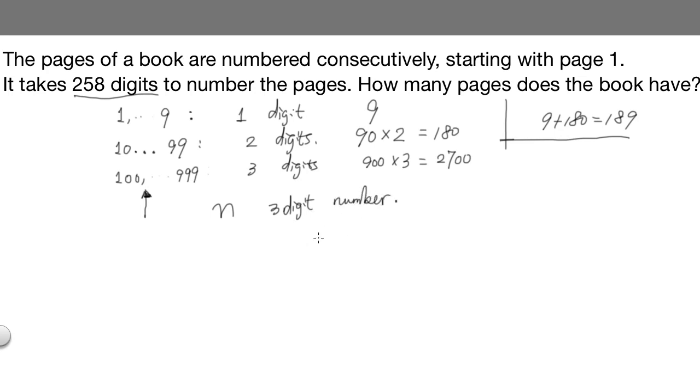So then we have an equation: 189, this is the number of digits used up to page 99, plus n times 3 equals 258. So n times 3 equals 69, which makes n equal 23.